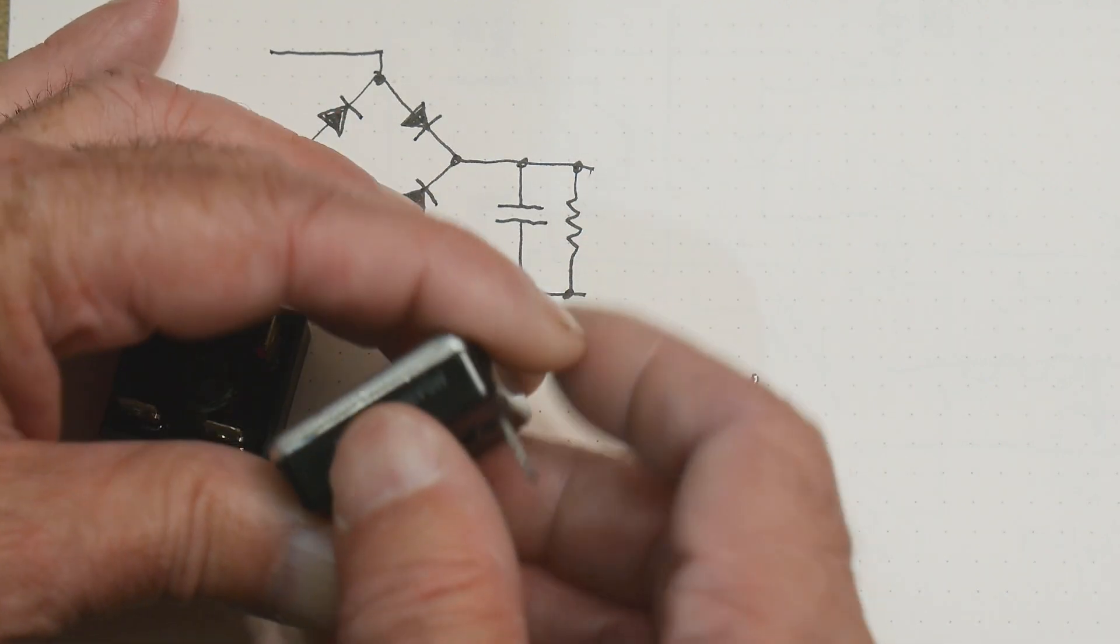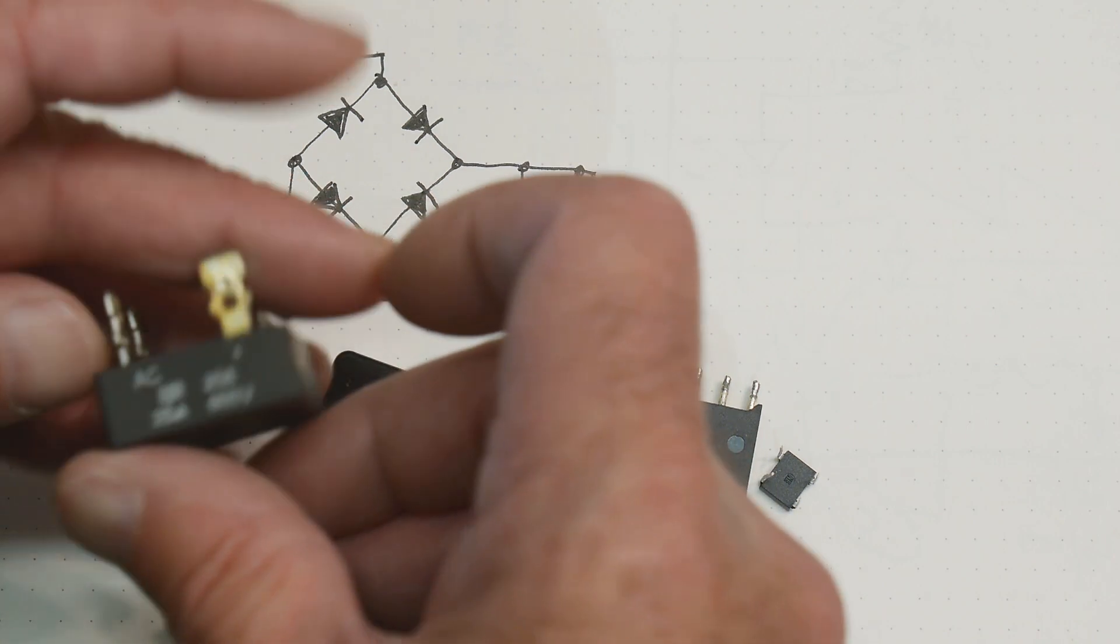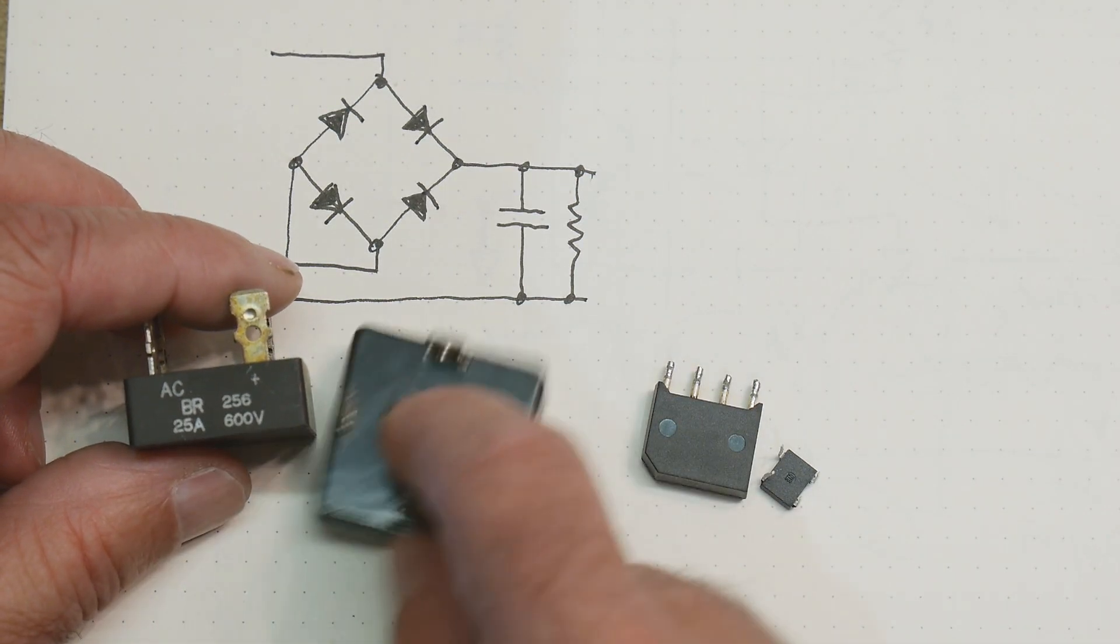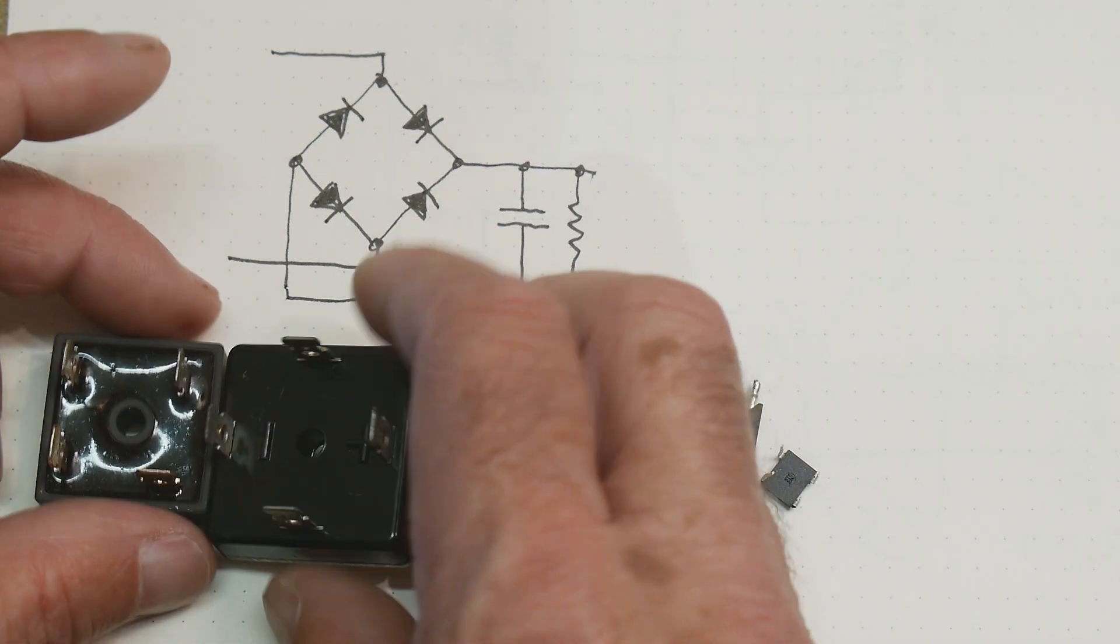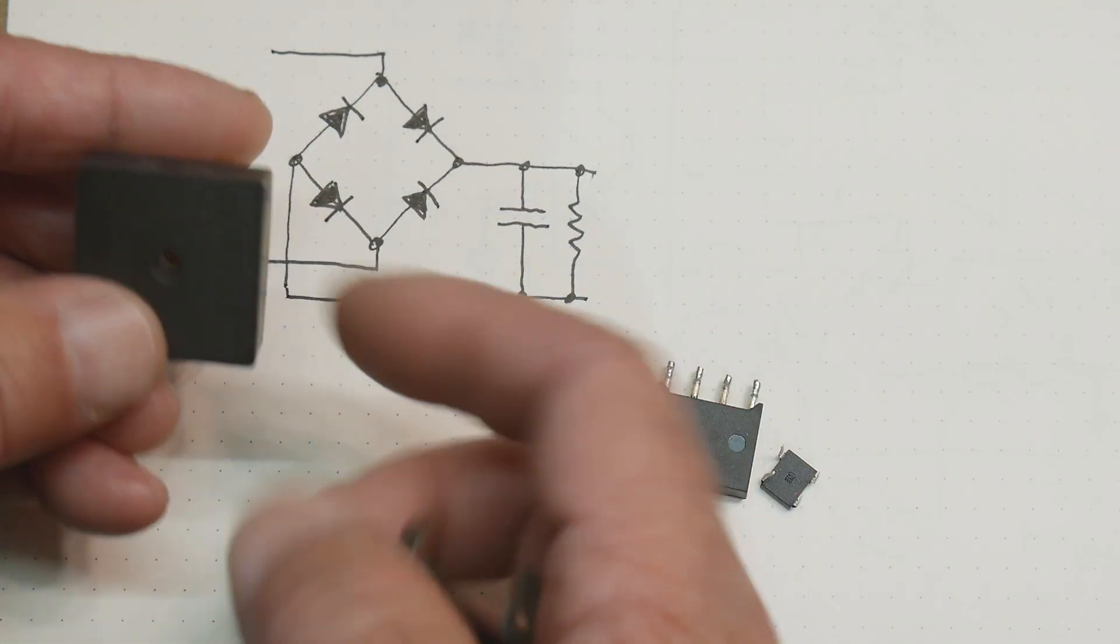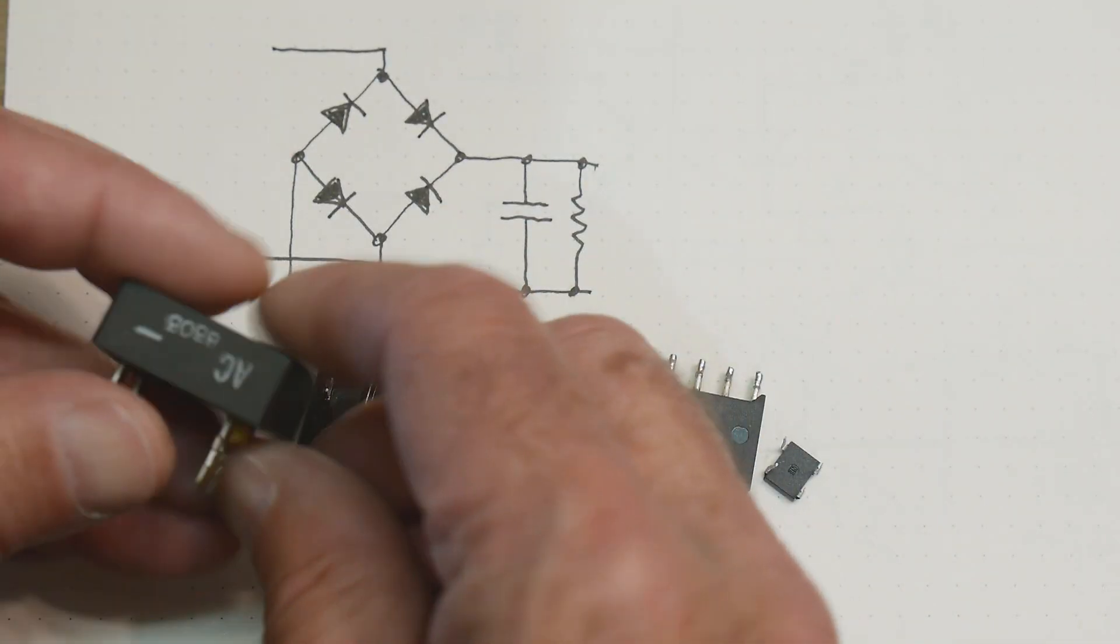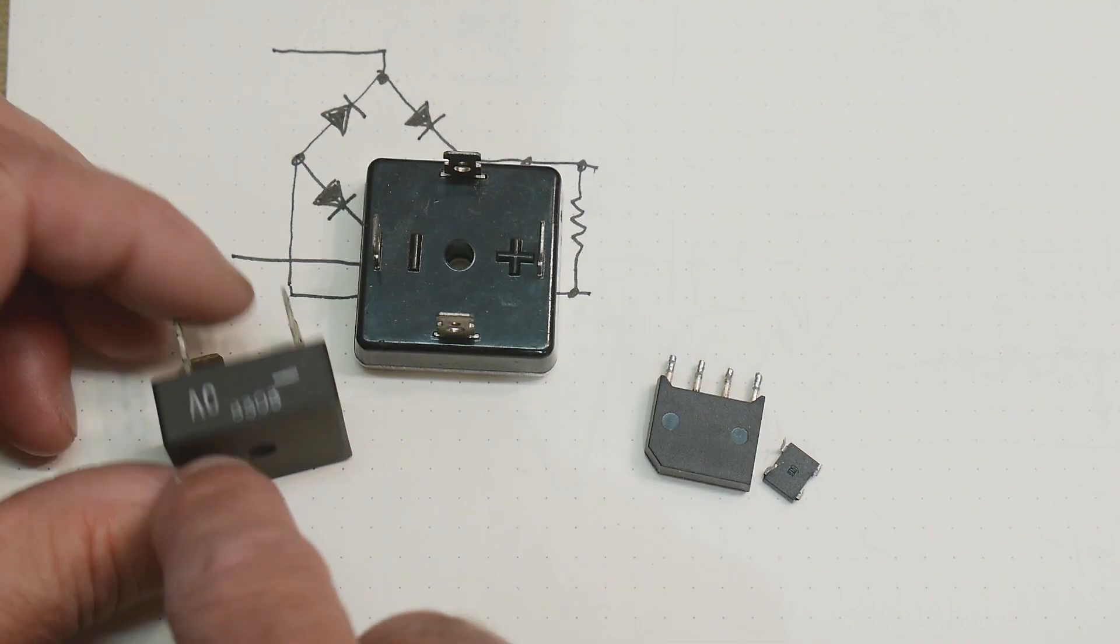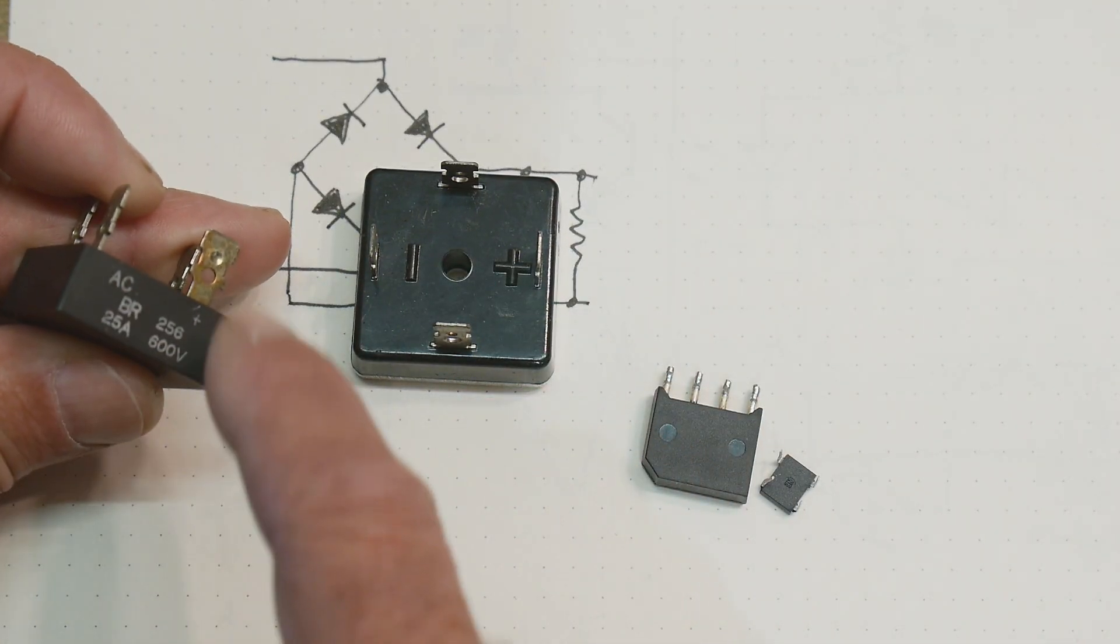I don't know how many amps this one's good for, probably a lot. Here's a nice big one as well. This one says 25 amps at 600 volts. This one looks even bigger. They can look like that. You can see this one's marked also. AC here, negative here, AC here, and positive here.